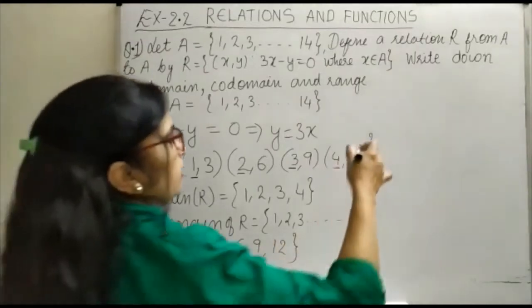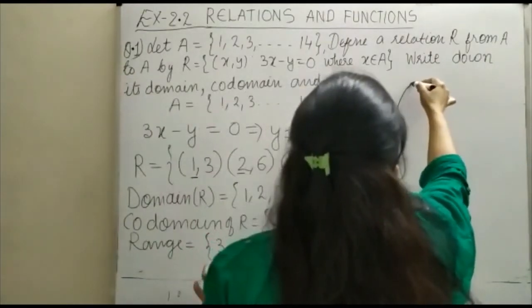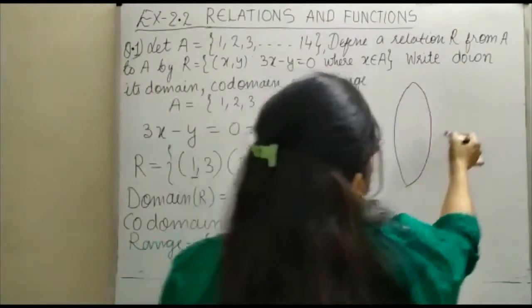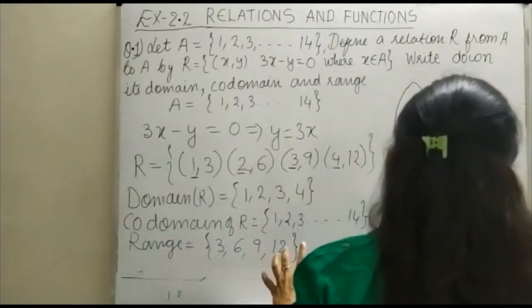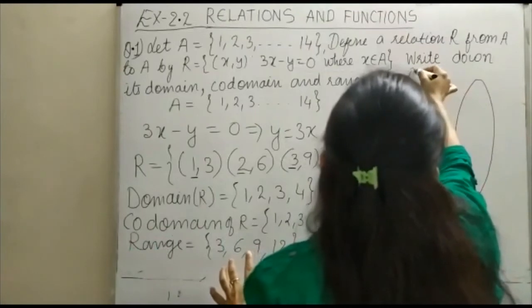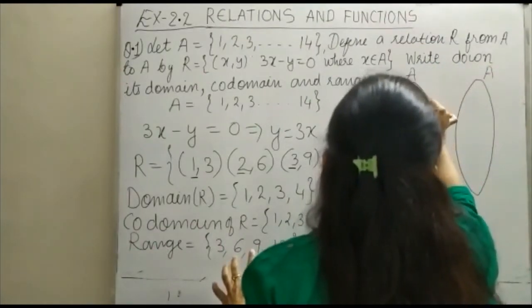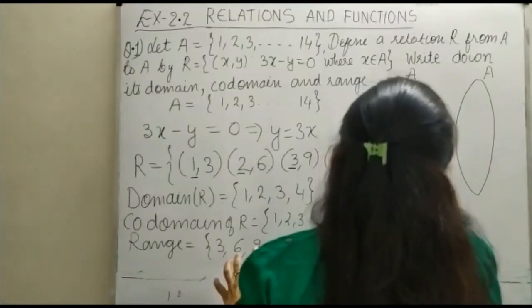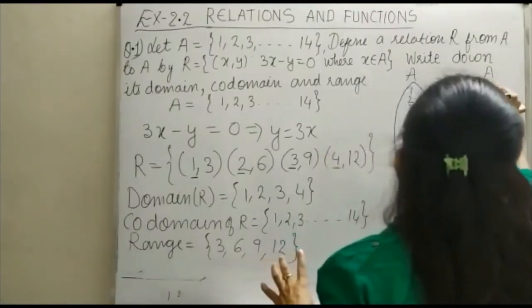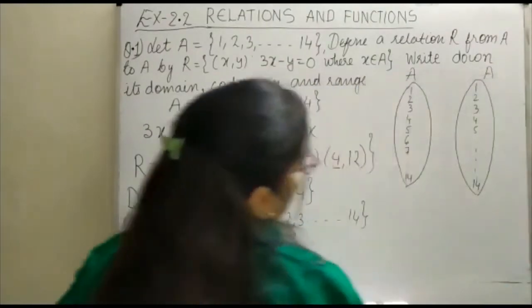We can also represent this by the diagrammatic representation, you can see here. यह भी set आपका A है, and this is also A. Write all the elements, 1, 2, 3, 4, 5, 6, 7, up to 14. Same is the case here, 1, 2, 3, 4, 5, up to 14.